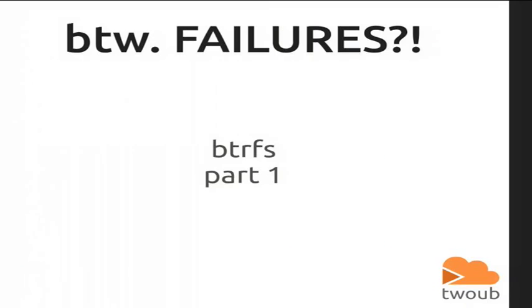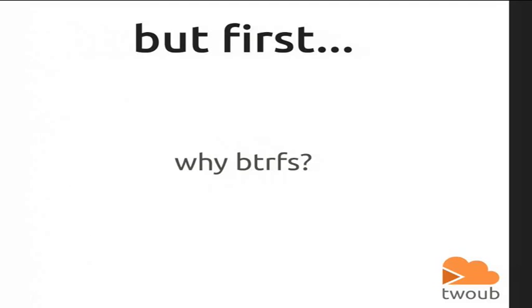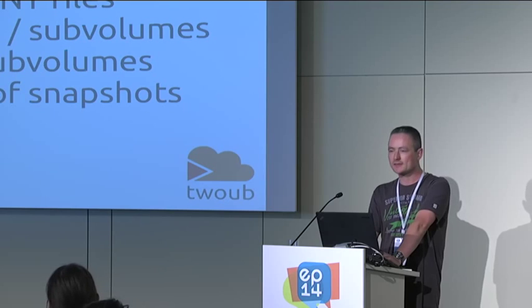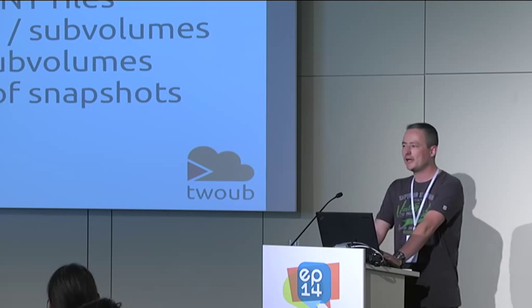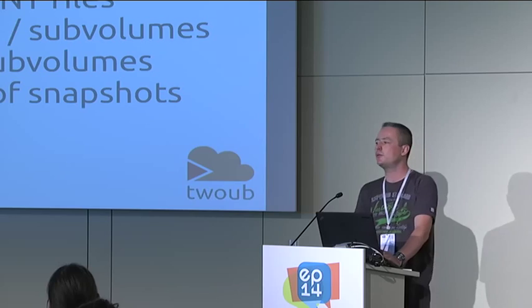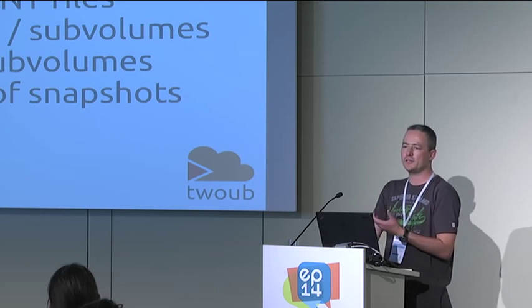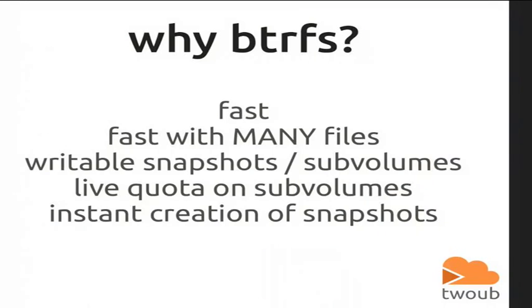So that leads me to the failures we had. Many. Let's talk about B3FS. We first chose B3FS instead of AUFS because it's fast — even fast for millions of files. It works very well. It has writable snapshots: at any point, you can use any sub-volume in a B3FS, make a snapshot of it, and write in both, and they diverge.